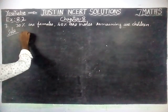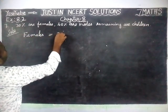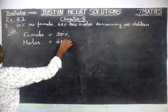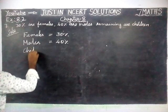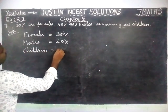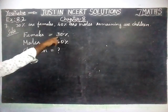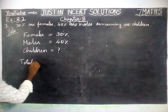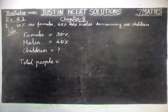First, we will write the given information. Females is equal to 30%, males is equal to 40%. We don't know the percentage of children. But to find that, this will be calculated from 100% — the total people in the city is equal to 100%.